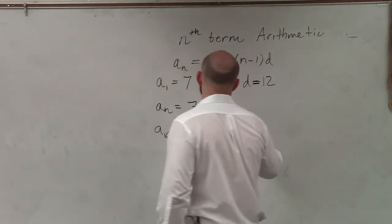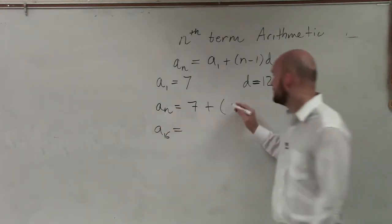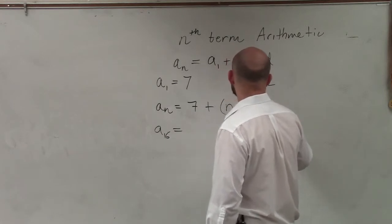7 plus, do we know what n is for the formula? No, for this formula? No. n minus 1 times d, which is 12.